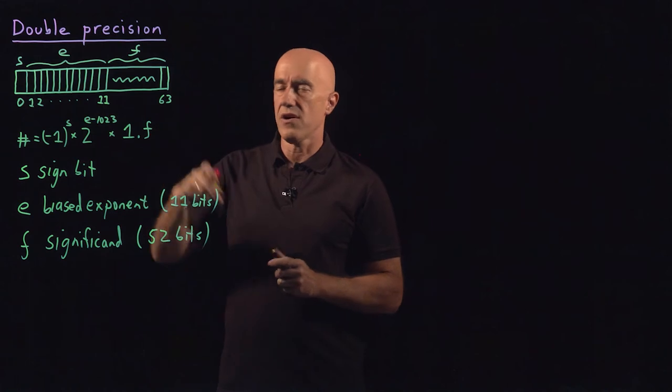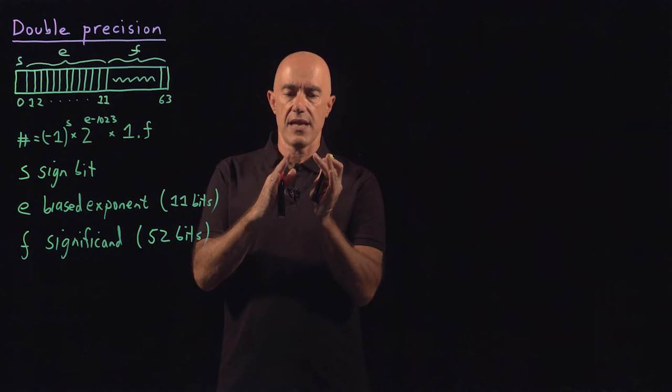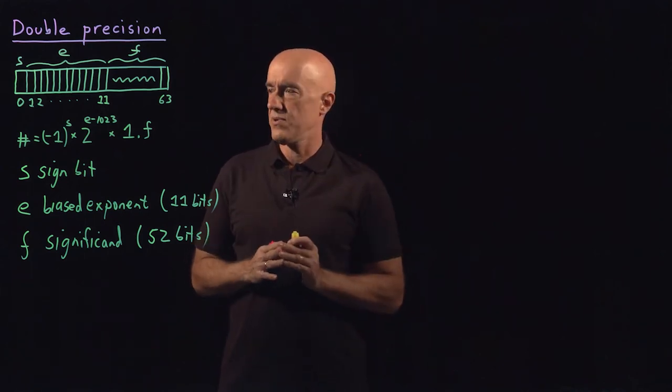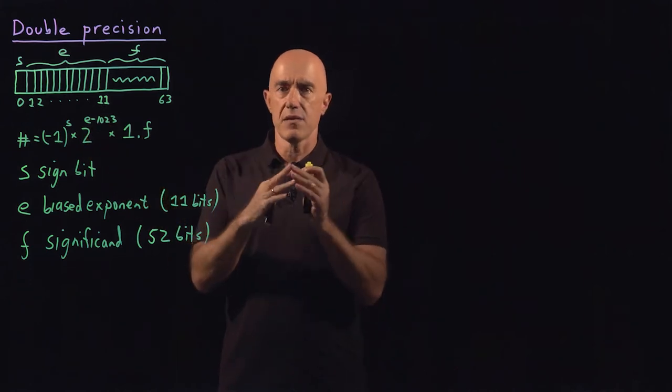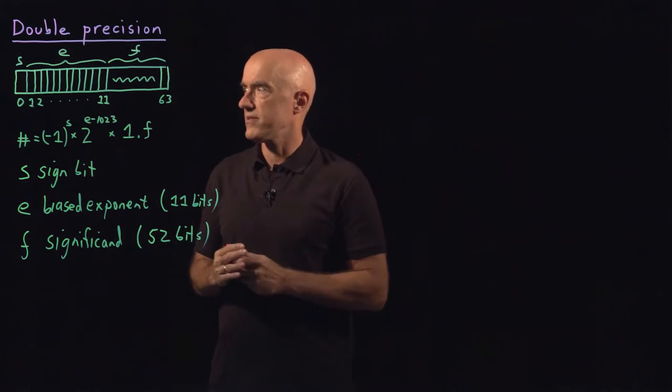So the idea of F then is to give you precision to make numbers as close as possible in the computer. So E makes numbers large and small and F makes the numbers as close as possible.